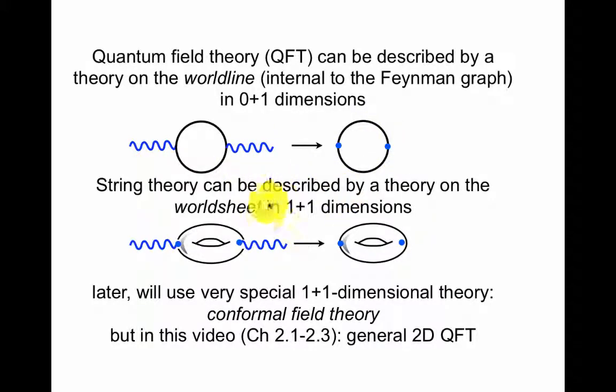String theory can be described by a theory on the world sheet in one plus one dimensions. So this circle is like this surface of this torus here, surface of a donut, but just like here there are vertex operators representing these vertices here. So now this is a theory internal to this one plus one dimensional world, and that's the world sheet. Later we'll use even more special one plus one dimensional theories that have conformal symmetry, but here in this video just like in Polchinski's book I will focus on general two-dimensional quantum field theories that are not necessarily conformal.